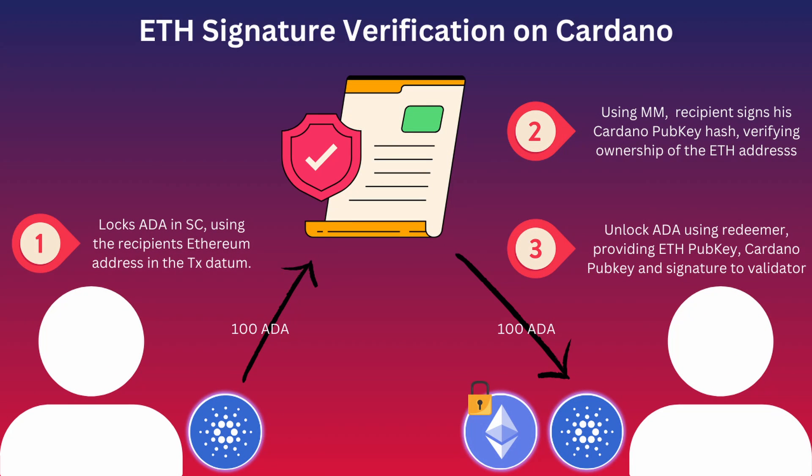Once Bob is done with that signature, he's able to unlock the ADA by using a redeemer, providing his Ethereum public key, his Cardano public key, and the message he signed using his MetaMask wallet. Once he does that, he's able to verify that he is the sole owner of that particular Ethereum-based wallet, therefore unlocking and giving him access to those 100 ADA on the Cardano network.